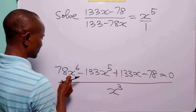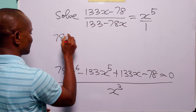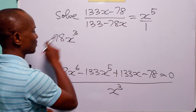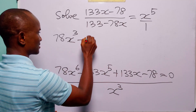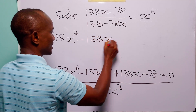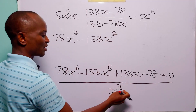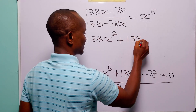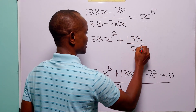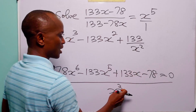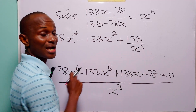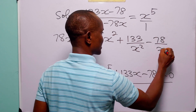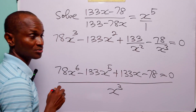With this division, we have 78x raised to the power 3 minus 133x raised to the power 2 plus 133 over x squared minus 78 over x cubed, and that is equal to 0.